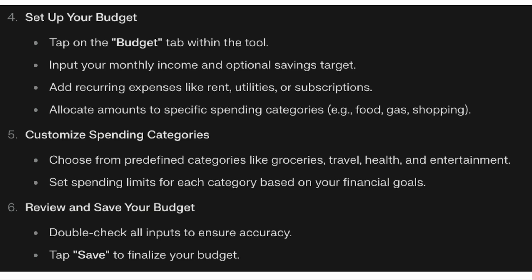Then allocate amounts to specific spending categories — this could be food, gas, and shopping. You can customize spending categories by choosing from predefined options like groceries, travel, health, and entertainment, and set spending limits for each based on your financial goals.